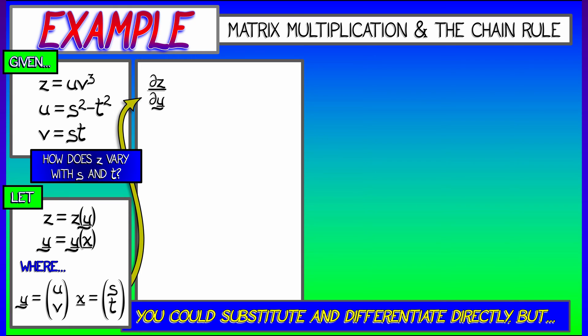The derivative of z with respect to the y variables, that is u and v, is partial z partial u and partial z partial v. Let's just compute that. That's easy. The first term is v cubed, and the second term is 3u v squared. Okay. So much for that. Not a problem.